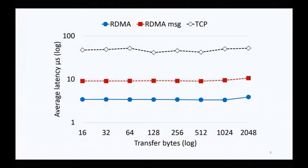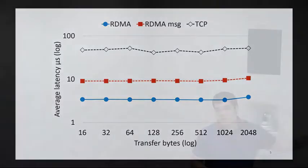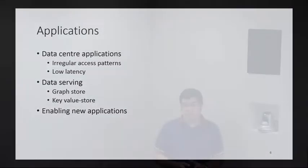Looking at latency in a similar microbenchmark with two machines having a single outstanding request, we again see an order of magnitude improvement in lowest latency. Latency is sometimes even more important than throughput because applications in data centers are often bound by the latency of network requests. These networks have really great performance — very good for data center applications with irregular data access patterns that are latency sensitive, such as graph stores or key value stores.